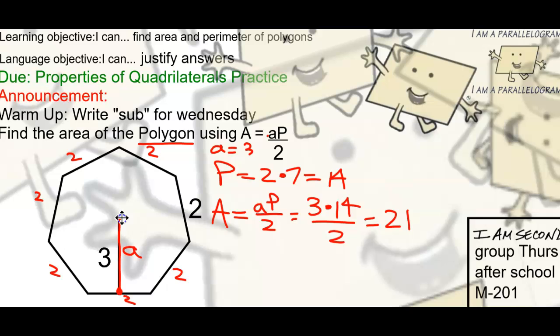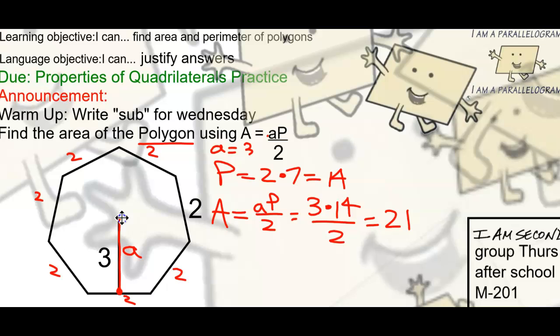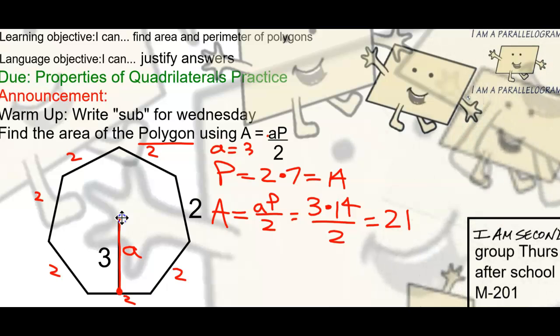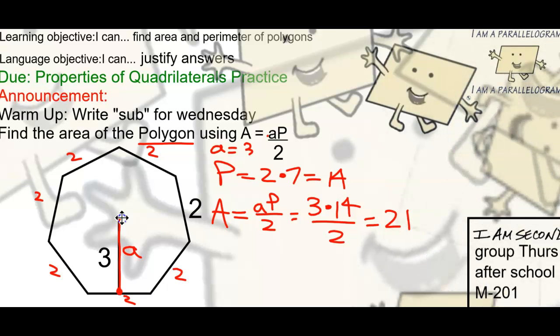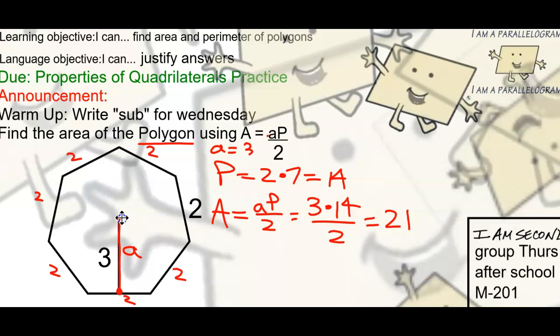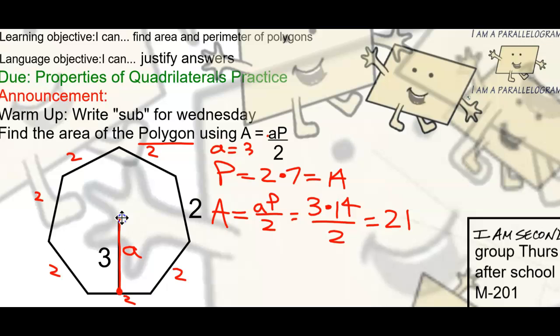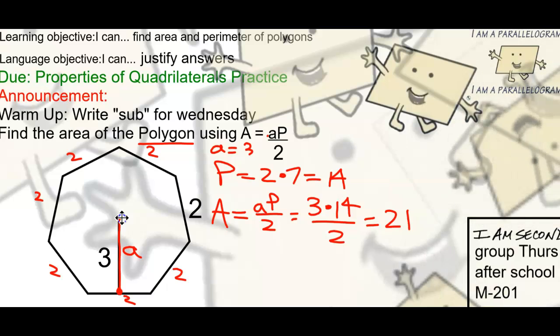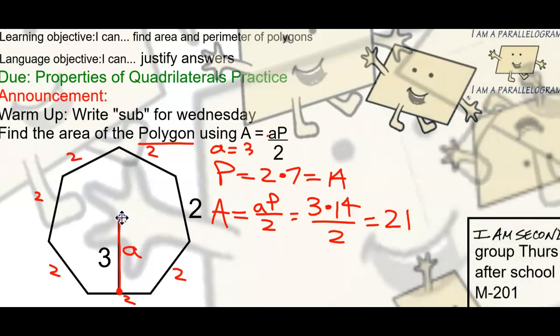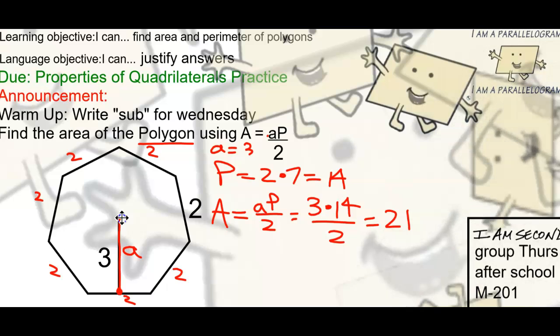That's it for perimeter and area of polygons. You should have done the notes yesterday, but if you weren't here, there's a filled-out version in the blue bin. Yesterday you should have gotten the area and perimeter assignment, M-219. If you don't have it, you know where to get it. Today I want to give you more time to finish this up.